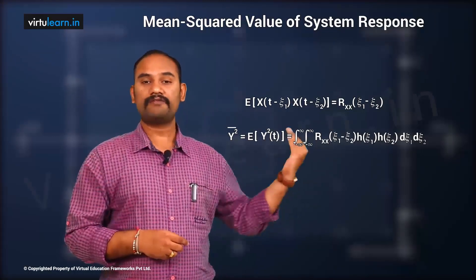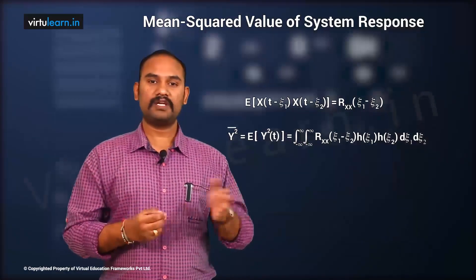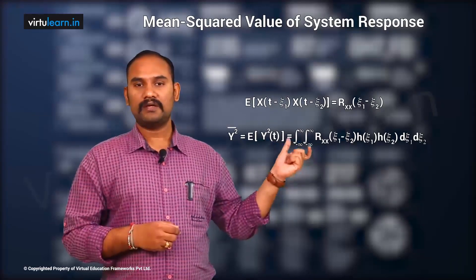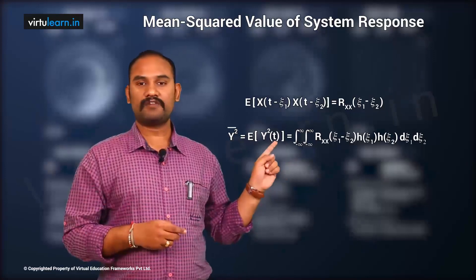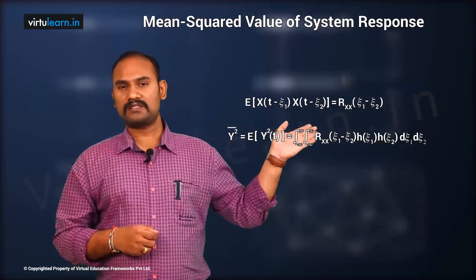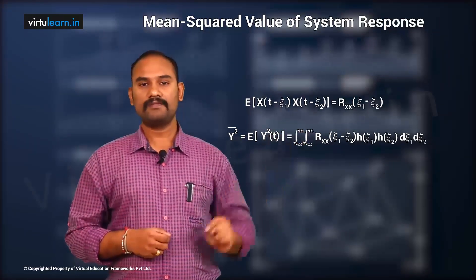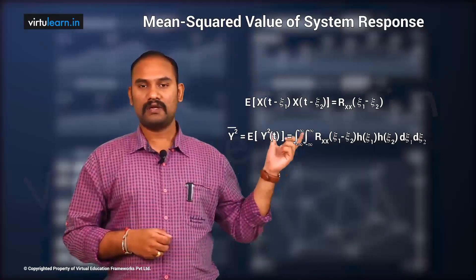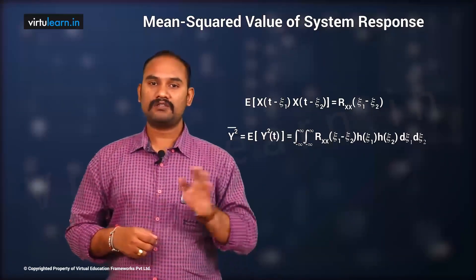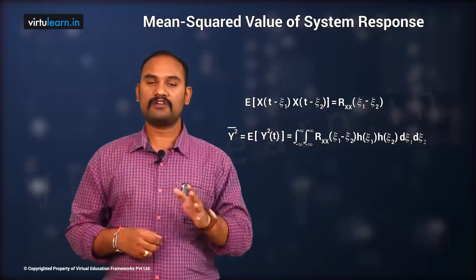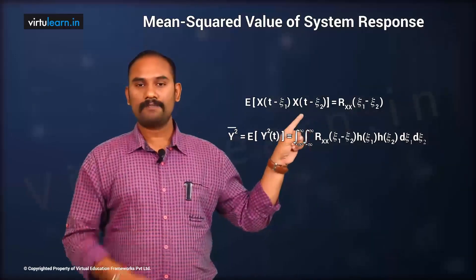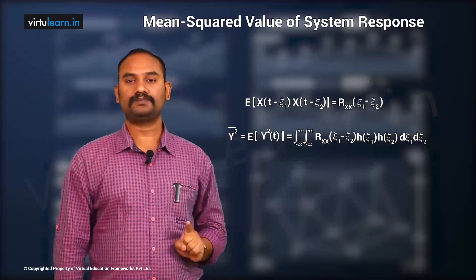The ACF is a function of τ = t₂ − t₁. Here, E[x(t − ζ₁) · x(t − ζ₂)] is of the form E[x(t₁) · x(t₂)], so the ACF is not a function of t₁ or t₂ individually, but of their difference. Therefore: E[x(t − ζ₁) · x(t − ζ₂)] = Rxx(ζ₁ − ζ₂), which is the difference of these two instants.